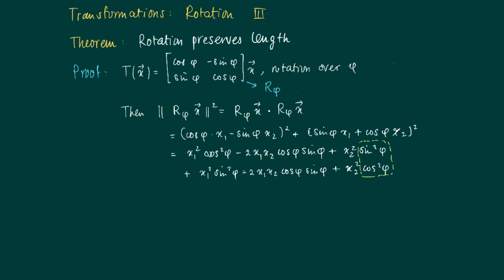We see that the terms related to x1 squared and x2 squared have the factor sine squared phi and cosine squared phi. But these add up to 1.